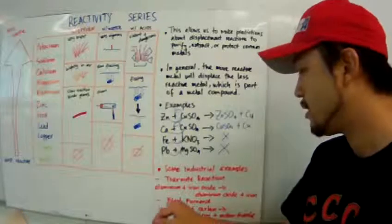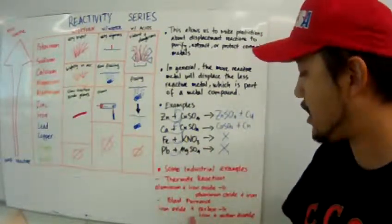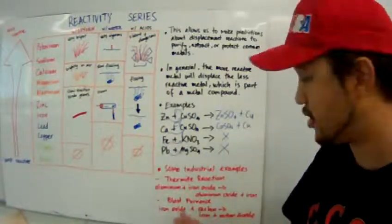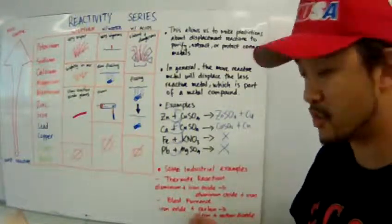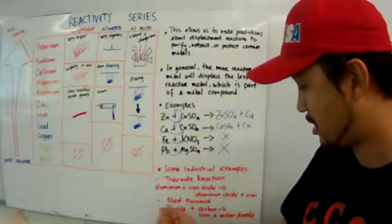Another method of extracting iron from its ore, iron oxide, is to put it into a blast furnace. Iron oxide mixed with carbon in a blast furnace. Carbon is more reactive than iron,